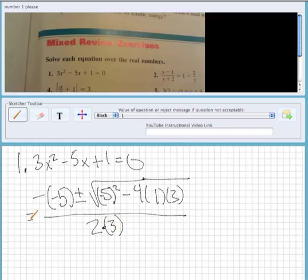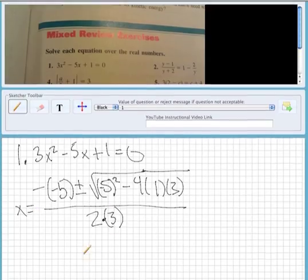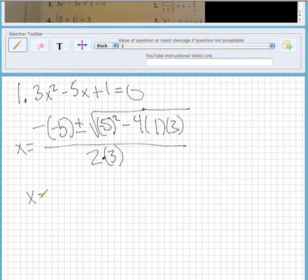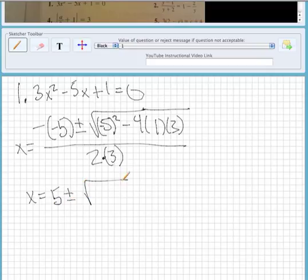So that's what x equals. Then we'll get x equals 5 plus or minus 25 minus 12 over 6.